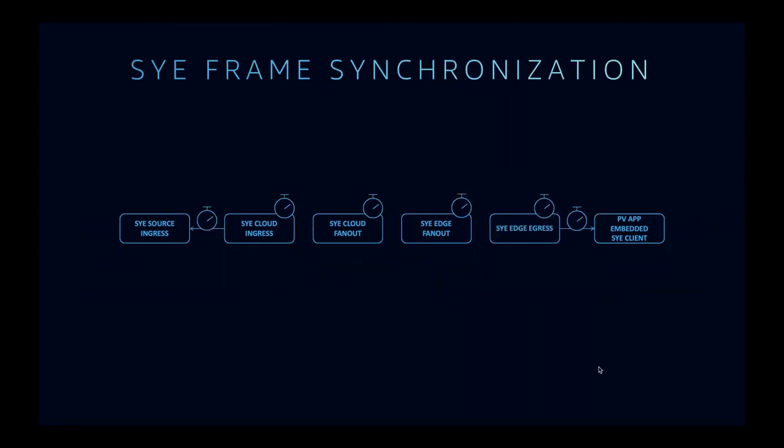As mentioned, we do frame synchronization, so all devices show the same frame at the same time. We do this by distributing time to different nodes in the system and the clients, so all nodes and clients share the same notion of time. This way we can tell the clients when to render a frame — it's synchronized but also fixed delay. Once you configure the delay and start the session, whether it lasts five minutes, five hours, or five days, it will never drift, and it maintains frame synchronization.